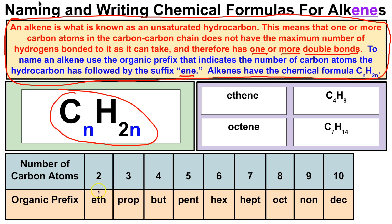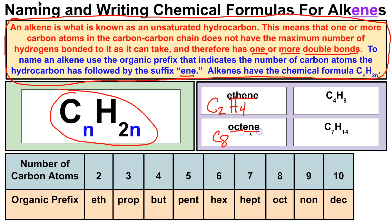You'll notice that 'meth-' is missing from the alkene prefix list, because with only one carbon atom there can't be a double bond to a different carbon atom. For ethene, the prefix 'eth-' means two carbon atoms. Plugging into the formula: 2 times 2 is 4, so ethene has the chemical formula C₂H₄. For octene, 'oct-' means eight carbon atoms. Plugging in: 2 times 8 is 16, so octene is C₈H₁₆.